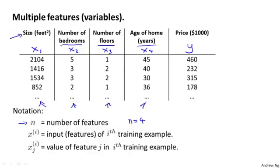And n is different from our earlier notation, where we were using m to denote the number of examples. So if you have 47 rows, m is the number of rows in this table or the number of training examples.